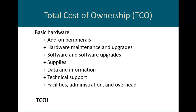Maybe there's software costs — someone needs a CAD program. We've got to look at the thousands of dollars that costs in this whole program of adding up what the total cost of ownership is for that computer. Maybe there are different supplies — someone has a two-in-one device and they want a touch pen so they can write on their screen while putting together a presentation. Different technical support and any other overhead all need to be included when presenting the total cost of ownership to your management team.